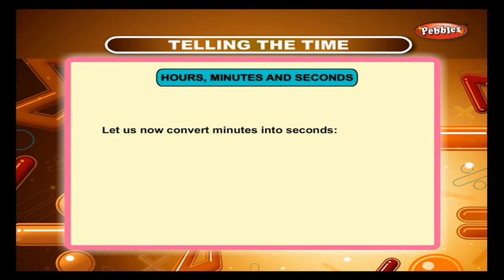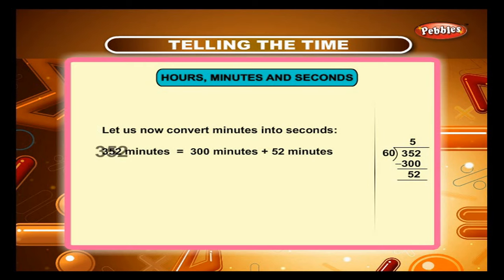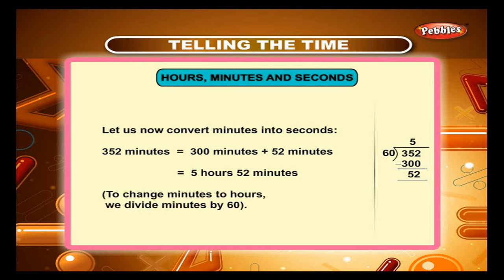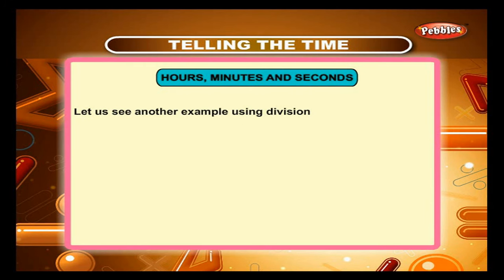Let us now convert minutes into hours. 352 minutes is equal to 300 minutes plus 52 minutes, which is equal to 5 hours and 52 minutes. To change minutes to hours, we divide minutes by 60.